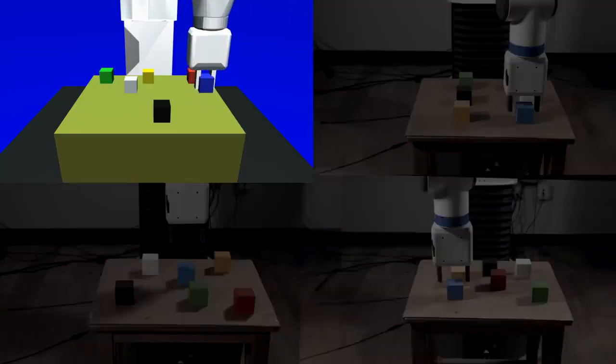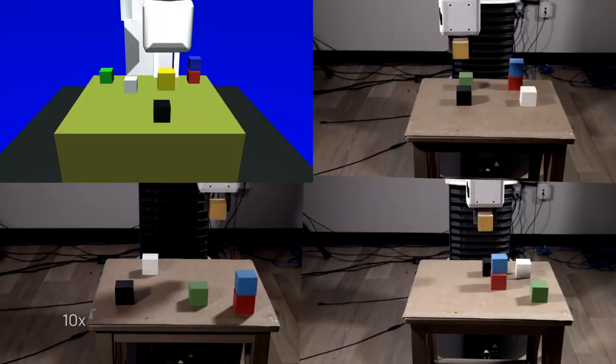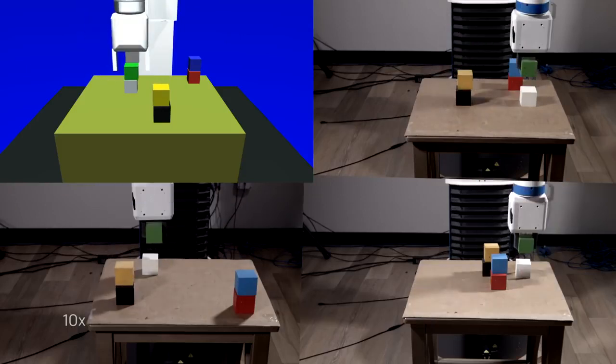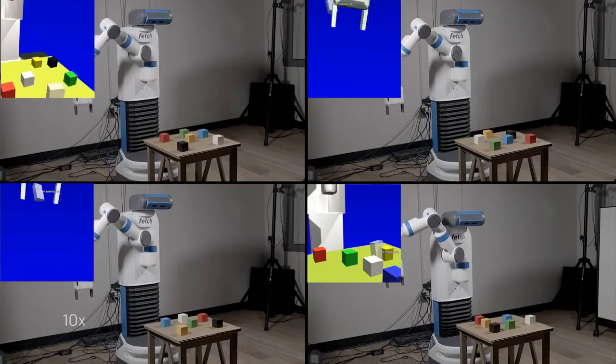With a single demonstration of the task, we can replicate it in a number of different initial conditions. Teaching the robot how to build a different block arrangement requires only a single additional demonstration.